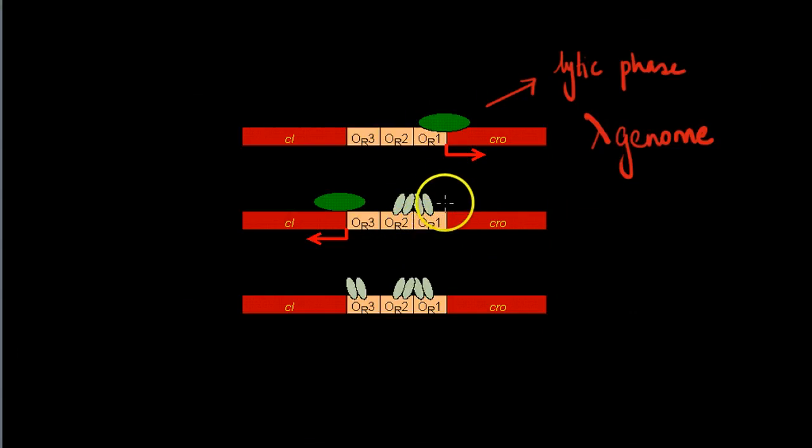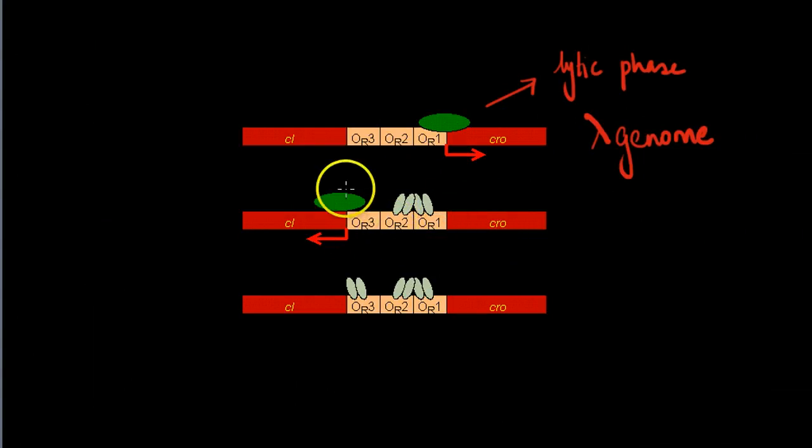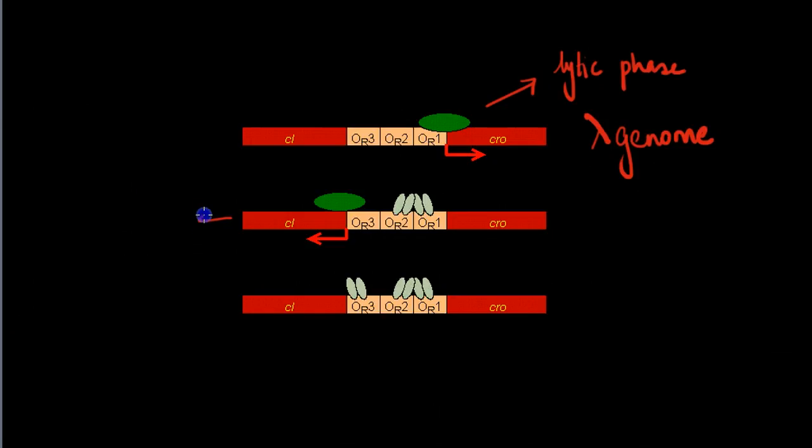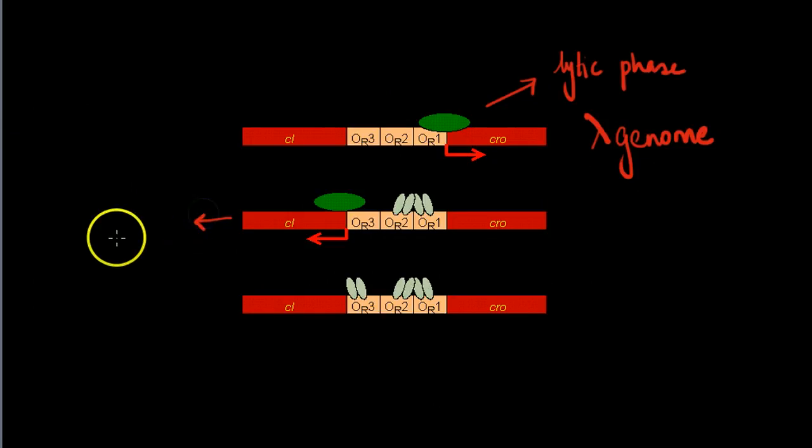It will prevent RNA from transcribing the CRO gene. Instead, it will allow the RNA polymerase to transcribe the CI gene, which will result in the bacteriophage being in the lysogenic phase.